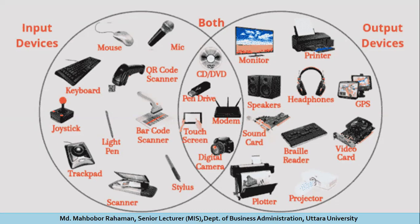Some devices act as both input and output devices. The touch screen is both input and output because we can give input directly and receive feedback at the same time. Similarly, digital camera allows you to give instructions and take output at the same time. Pen drive, CD, DVD drive, and modem are also both input and output devices.